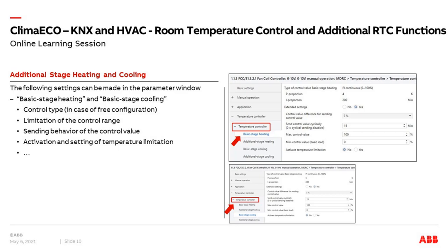Further adjustable parameters include the control type — for example, a fixed-value PI control with proportional band 4K and I-proportion 200. With free configuration selected, these are flexible and can be changed. There are further parameters such as the limitation of the control range so it's not running between 0 and 100% — you can limit this. There is also activation of temperature limitation, which we will cover in one of the next slides.